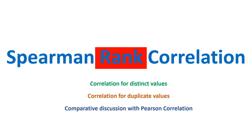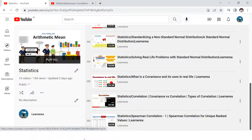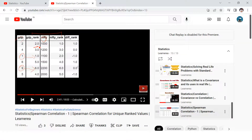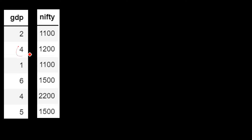Hello everyone. In this video we're going to see how we can find the Spearman rank correlation when the values are duplicate, or when we have repeated ranks. Before we proceed further, I want you to check out the first part of the Spearman rank correlation where I explained how to find the rank correlation when the values are unique. Today we're going to see how to find the correlation when the values are duplicate — for example, GDP 4 is repeated twice.